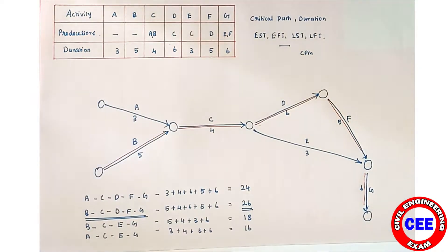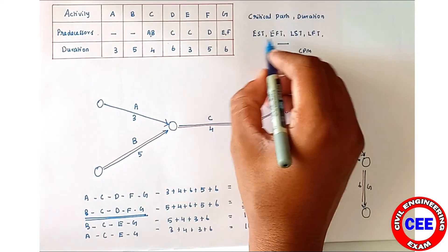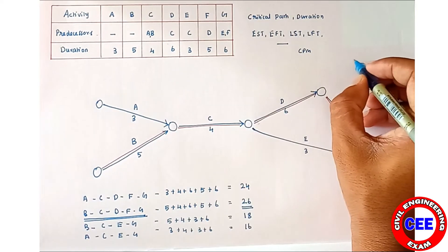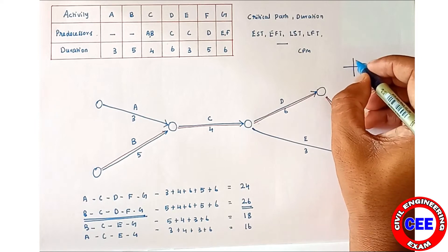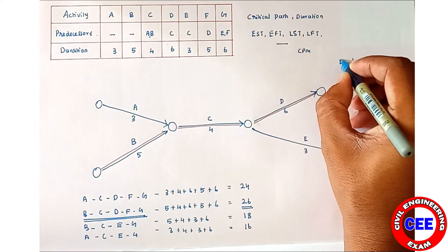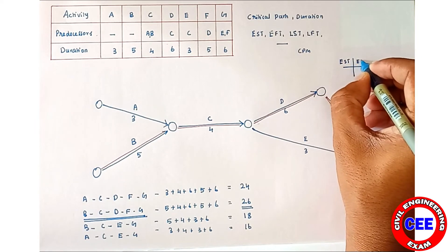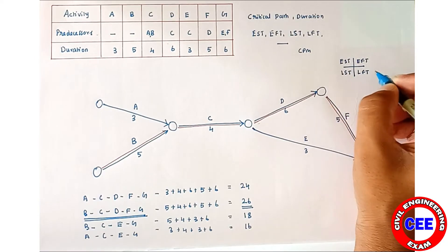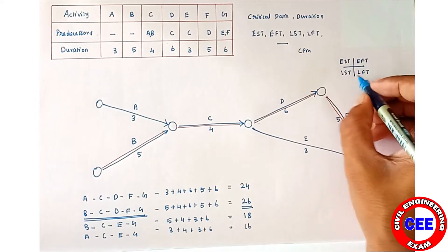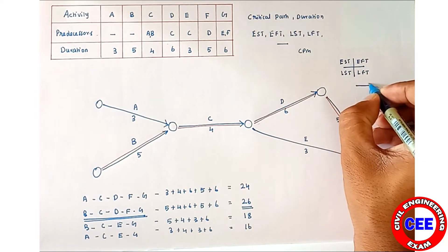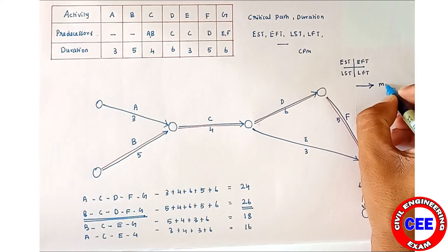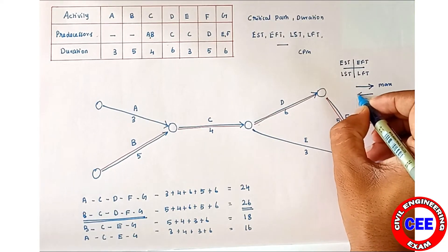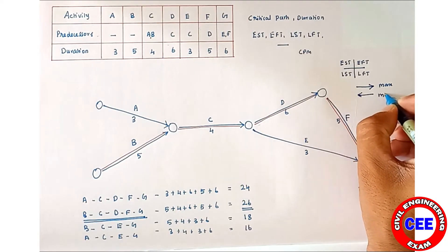Now we are going to find out the EST, EFT, LST, and LFT of the corresponding activities. We can put a plus symbol on each activity. The key rule to remember: when going in the forward direction, the maximum value will be taken; when going in the reverse direction, the minimum value will be taken.